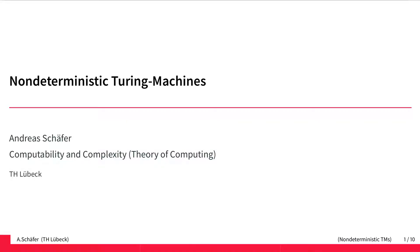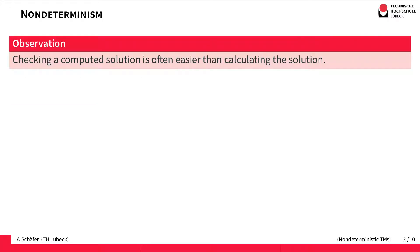This video is about non-deterministic Turing machines — machines that solve their problems simply by guessing correctly. You might agree that checking a computed solution is often easier than actually calculating the solution.